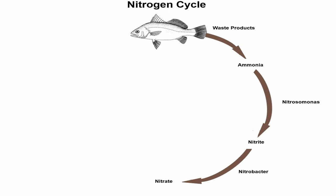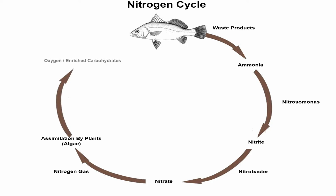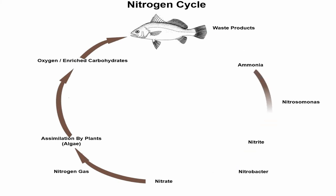Then denitrification occurs, releasing nitrogen gas. This nitrogen is assimilated by being absorbed by plant life or algae. Plants and algae thrive and undergo photosynthesis, producing oxygen and enriched carbohydrates. Aquatic life and fish then thrive to consume these carbohydrates and oxygen, thus regenerating the perpetual, self-sustainable cycle.